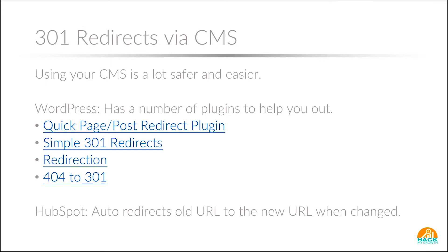The easier way is to use your CMS. We use a lot of WordPress for our sites, and there are four plugins that are good and help you do this with relative ease: Quick Page Post, Simple 301 Redirects, Redirection, and 404 to 301. If you have a lot of 404s and you don't really know what they are, you can install the 404 to 301 plugin and have all your broken links point to your home page — an easy way to fix all your 404 errors. If you're using HubSpot, they actually auto-redirect the old URL to the new URL when you change it, using a 301 redirect. A lot of CMS platforms are moving in that direction as well.